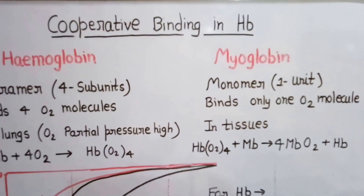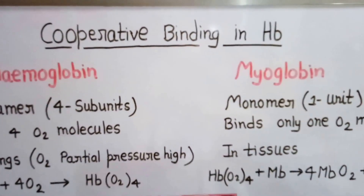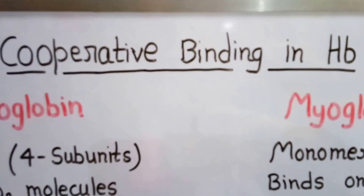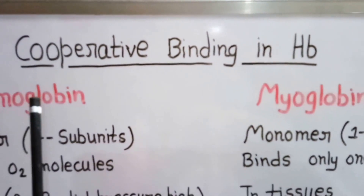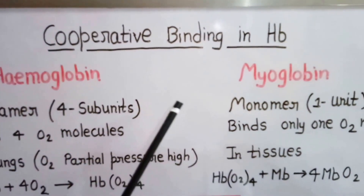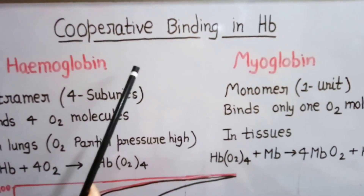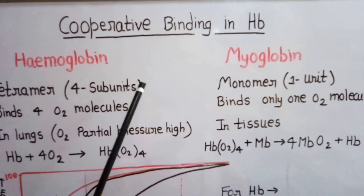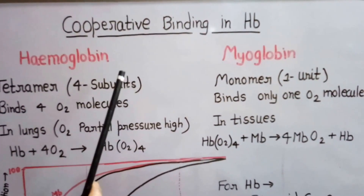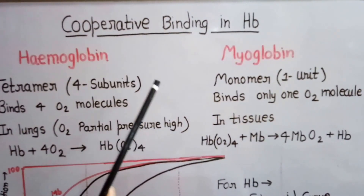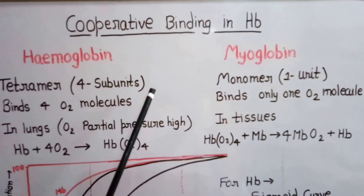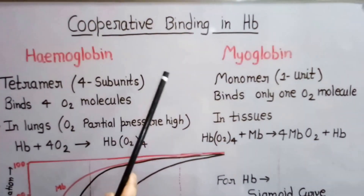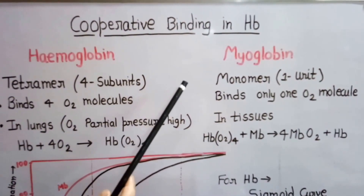Hello friends, today we will study about cooperative binding in hemoglobin. In hemoglobin, a special type of binding is found for oxygen that is called cooperative binding. To understand this, we will first look at two proteins found in humans: hemoglobin and myoglobin, which act as oxygen carriers. Hemoglobin is found in blood while myoglobin is found in the tissues.